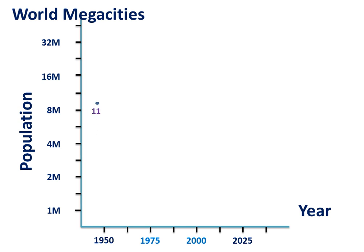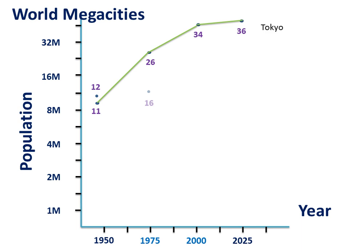The first city we're going to look at is Tokyo. It started with 11 million, 25 years later it was at 26 million, in 2000 it was at 34 million, and in 2025 it's projected to be at 36 million. The next city is New York. New York started with 12 million in 1950, went to 16 million in 1975, 18 million in 2000, and is projected at 20 million in 2025.